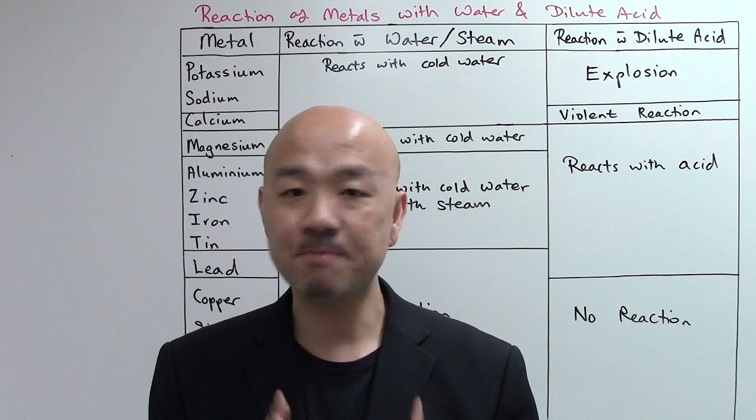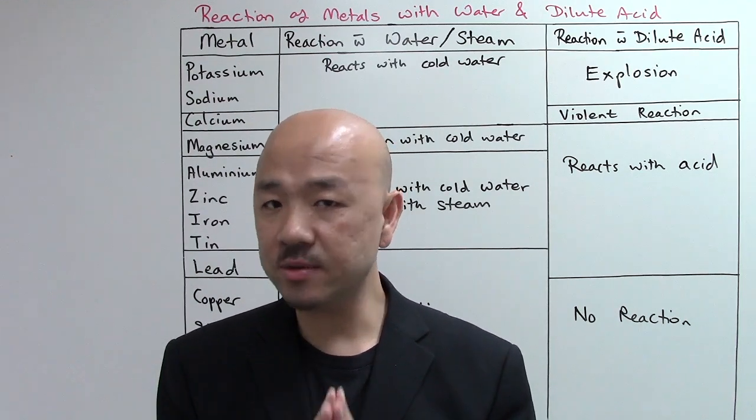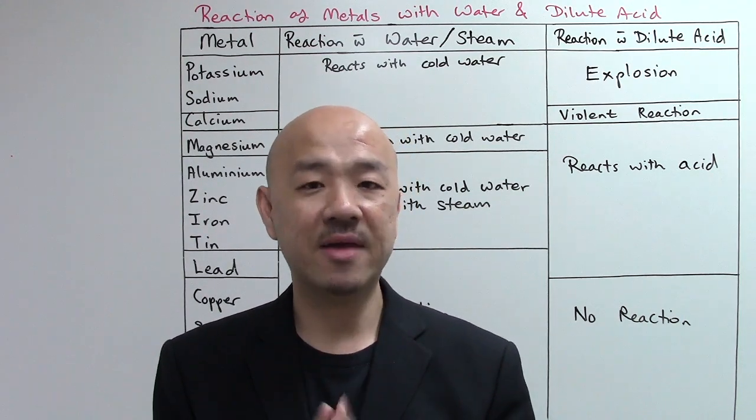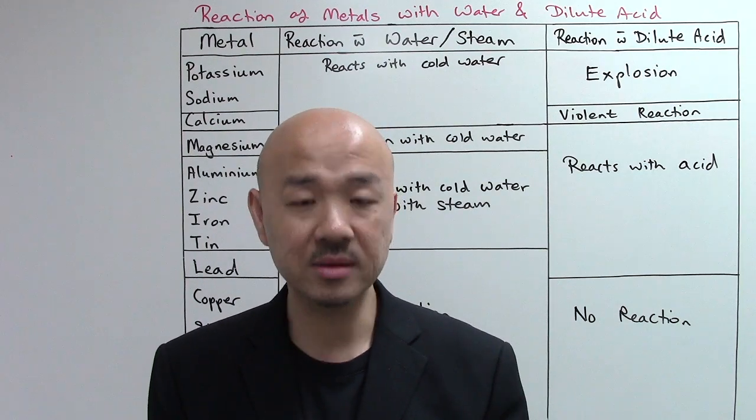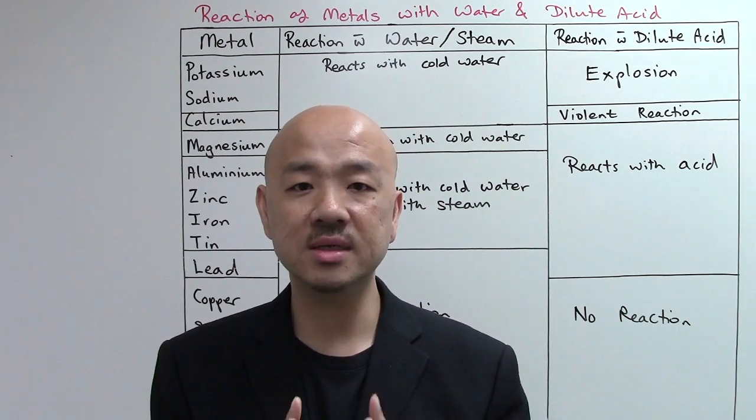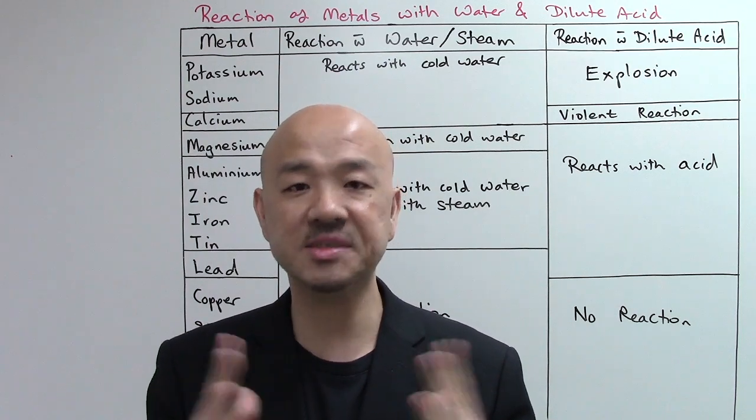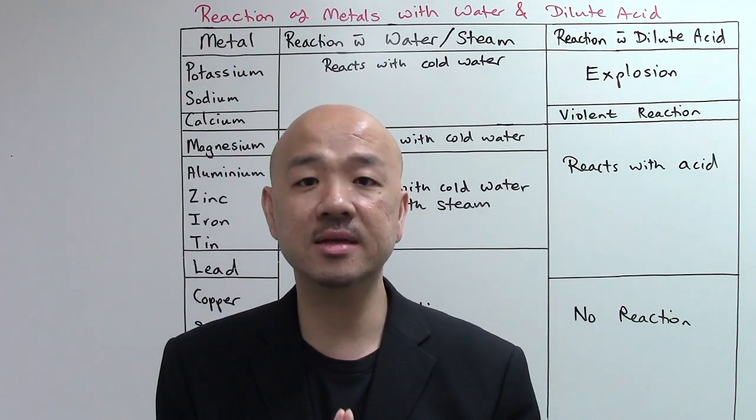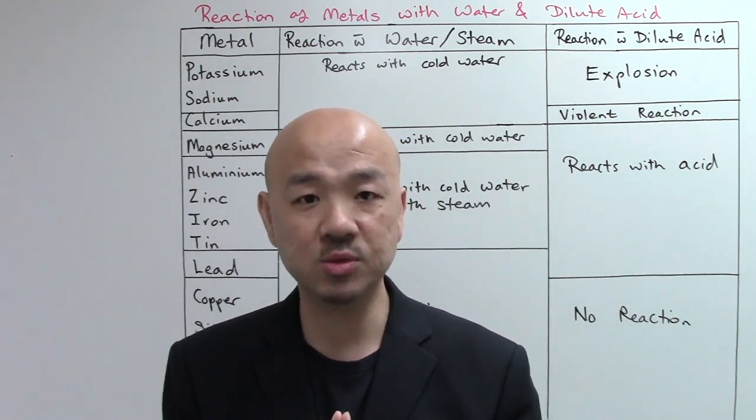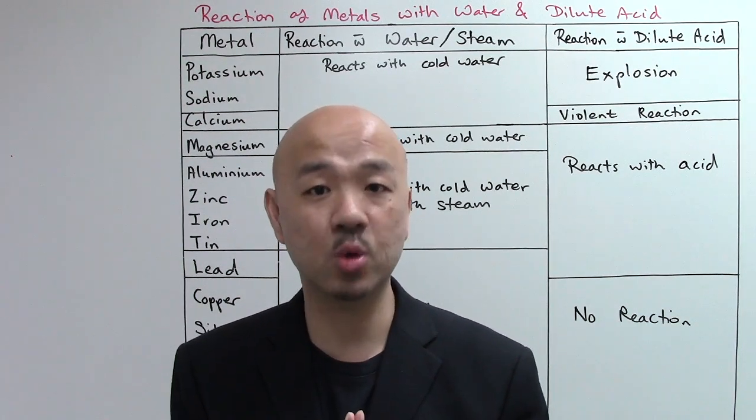The reactivity series is very useful to predict the chemical properties of metals in our everyday lives. You probably recall from my previous video that the list of metals are arranged in that order because of the reaction with water, steam, and hydrochloric acid. Scientists have done experiments after experiments and consolidated those results to give you that list. Let me discuss how these reactions are represented in terms of chemical equations.